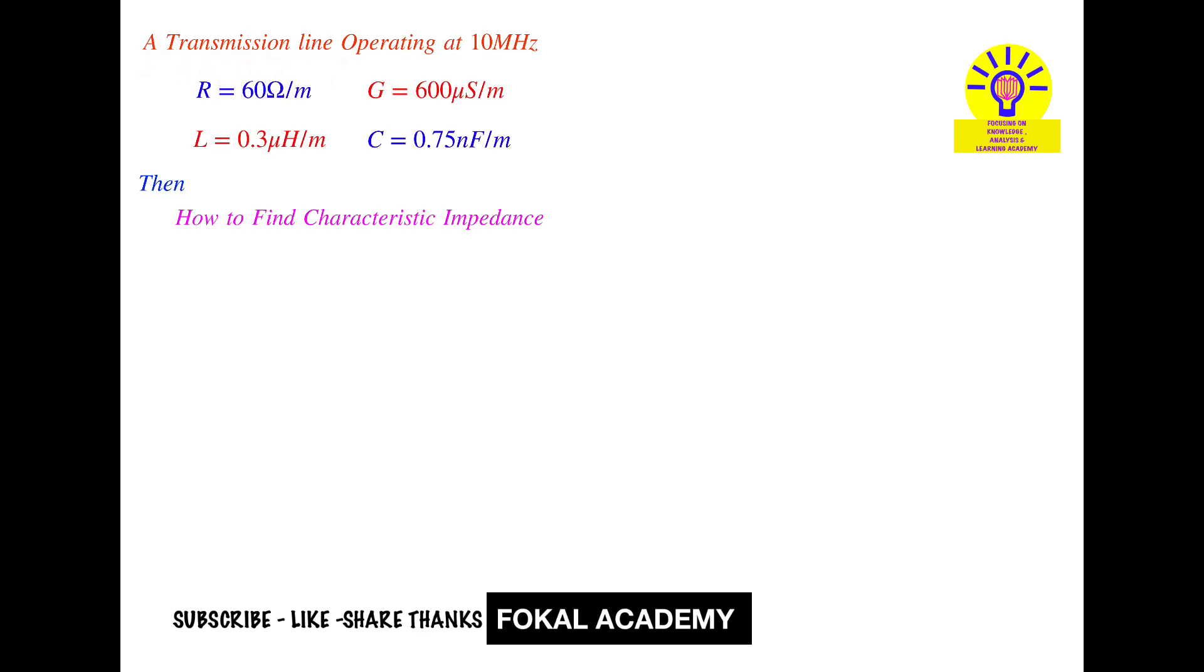This characteristic impedance is represented by the letter Z₀. Now, how can you find it? We know that Z₀ equals the square root of (R + jωL) divided by (G + jωC).